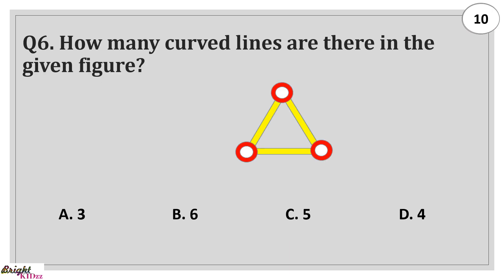How many curved lines are there in the given figure? Answer: 6. Outer curved line and inner curved line, total 6 are there.